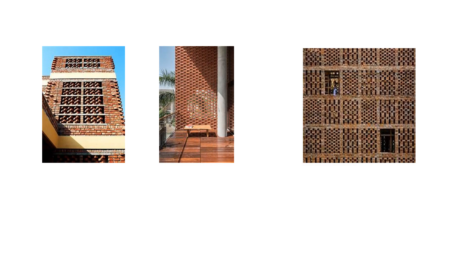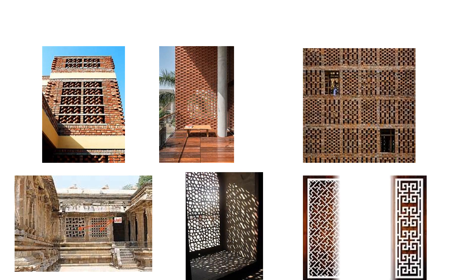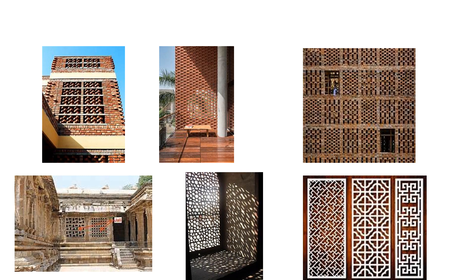Let us observe these pictures and structures. Did you see net-like structures on the walls of the building? These structures are called Jalis. These Jalis allow air to flow inside the building. You can see Jali patterns in buildings.